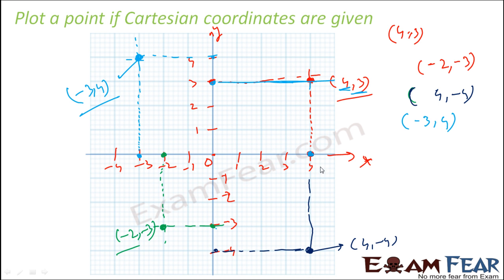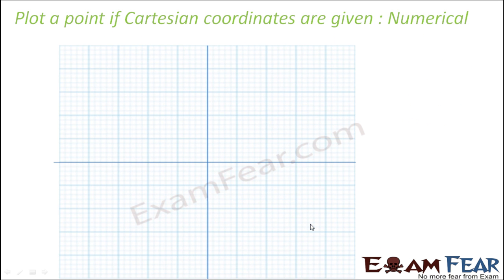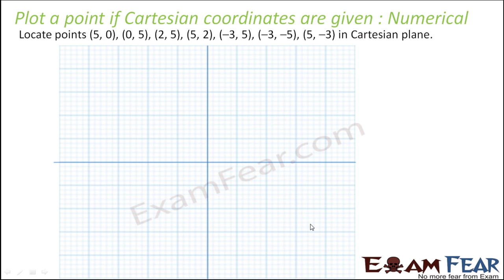For 4 comma minus 4: find 4 on the x-axis and minus 4 on the y-axis, draw perpendiculars and they meet at that point — which is 4 comma minus 4. Now let's take a numerical exercise where we have to locate several points on the graph.